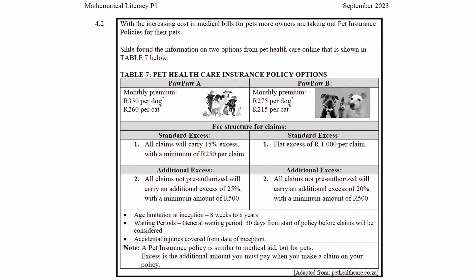There are separate fee structures for the claims for each option. For Paw Paw A you have to pay a standard excess on all claims of 15% with a minimum of 250 rand per claim. There is a note which states that all claims not pre-authorized will carry an additional excess of 25% with a minimum of 500 rand.